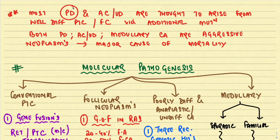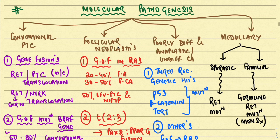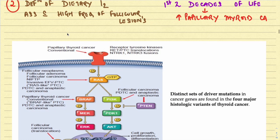Most poorly differentiated and anaplastic or undifferentiated thyroid carcinomas are thought to arise from well-differentiated papillary or follicular carcinomas via additional mutations. Poorly differentiated and undifferentiated or anaplastic carcinomas, as well as medullary carcinomas, are aggressive neoplasms and contribute towards the major cause of mortality from thyroid carcinoma.